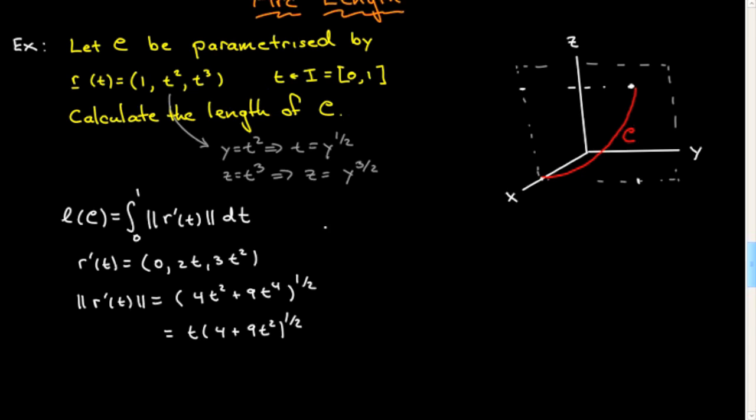So all we have to do, and I think I can just do it in here, all we have to do now is integrate. So we can just plug in here. Integral from zero to one of t times 4 plus 9t squared, one-half dt. In this case, it's rather easy to integrate, that's going to be 4 plus 9t squared to the three-halves, divided by 27.